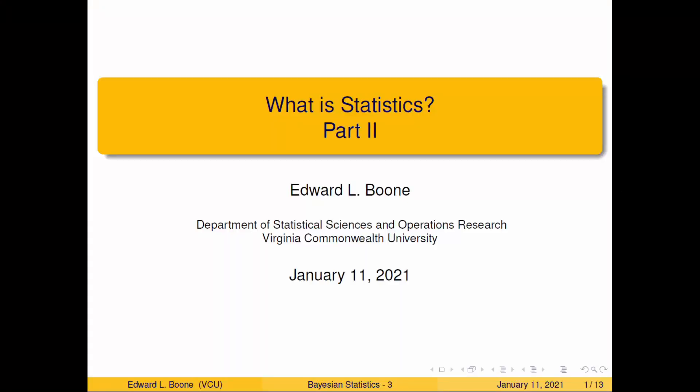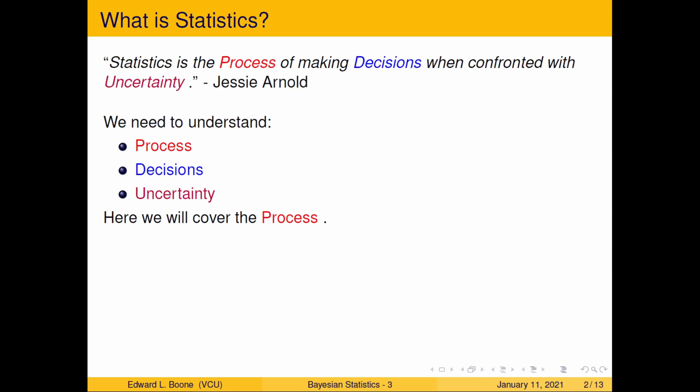Welcome to What is Statistics, Part 2. Alright, so last time we talked about Jesse Arnold's definition of statistics. And we said it was a process, decisions, and uncertainty are the three key ingredients. So statistics is the process of making decisions when confronted with uncertainty. So here we'll talk about the process.